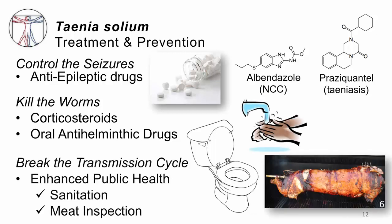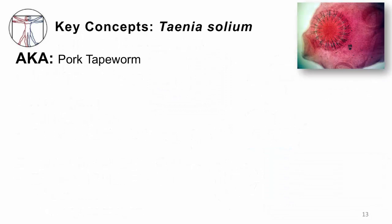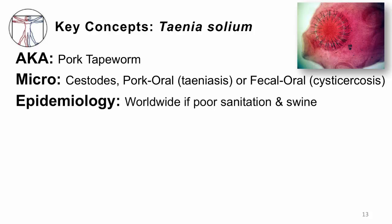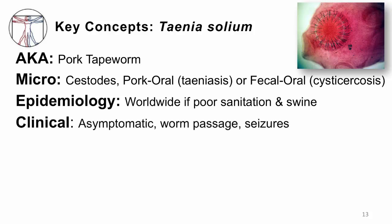In terms of breaking the cycle, we need better public health measures — better sanitation to cut back on cysticercosis, and a better system to inspect the meat of pigs to cut back on teniasis. These key concepts for Taenia solium, the pork tapeworm: you can acquire teniasis when you eat undercooked pork with cysts in it, and you can acquire cysticercosis if you eat food contaminated with human feces containing eggs from that worm. It happens everywhere in the world where there's poor sanitation and where people raise pigs.